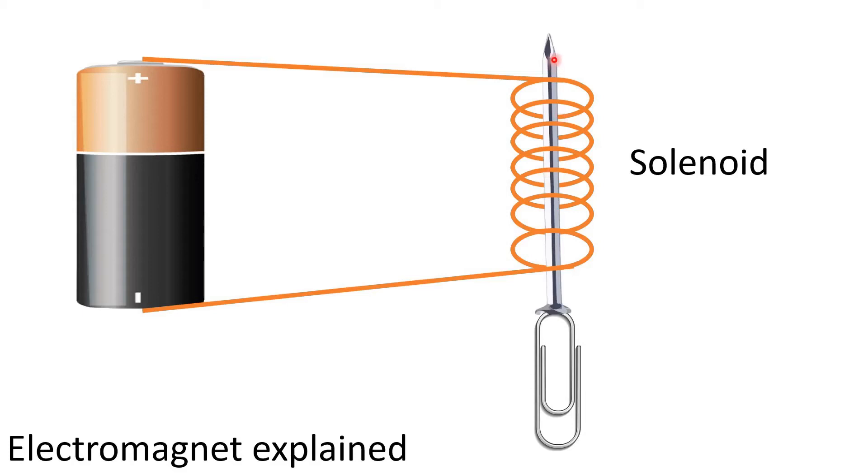And the role of the nail is actually to extend the magnetic field outside. And also because it's a ferromagnetic material, it extends not only outside but it also enhances the magnetic field.